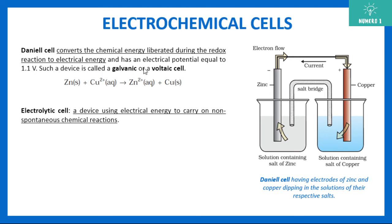Such a device is also called a galvanic or voltaic cell. An electrolytic cell, on the other hand, is a device that uses electrical energy to carry out non-spontaneous chemical reactions. So Daniell's cell converts chemical energy into electrical energy, whereas an electrolytic cell uses electrical energy to drive non-spontaneous chemical reactions.